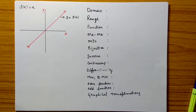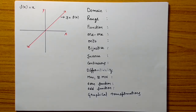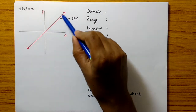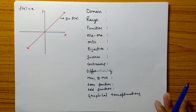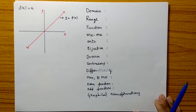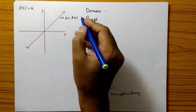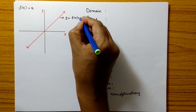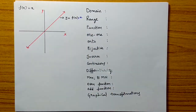Hello everyone. In this class, we will learn the graph f of x equals x and its behavior. This is the graph of y equals f of x, where f of x is x. So we are drawing the graph y equals x.